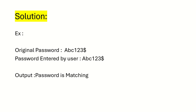For example, the original password is 'abc123', and the password entered by the user is also the same. Then we have to show the message box: 'password is matching'. We will try to build this same solution in the Automation Anywhere tool.